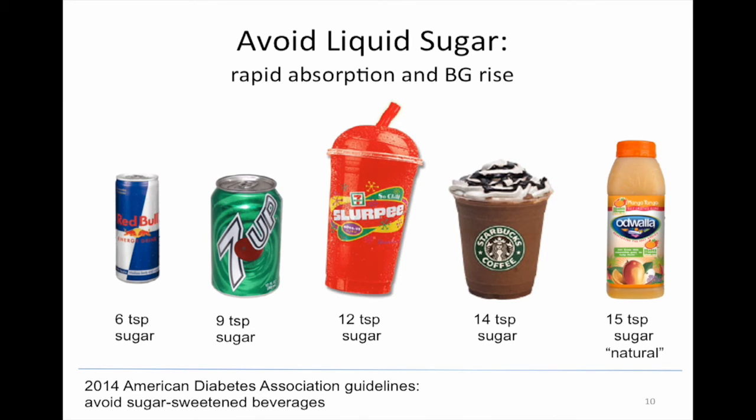Something bigger like a Slurpee, 16 ounce Slurpee might be more like 12 teaspoons. And those coffee drinks have a lot more than people realize in terms of calories and in carbohydrate. Now, so many people think once they're diagnosed with anything that they should start drinking more juice for some reason. They go out and buy juicers and it's ingrained in them that juice is a healthy thing.